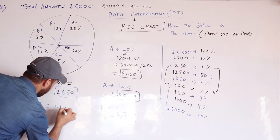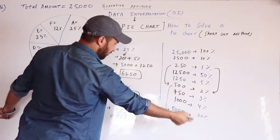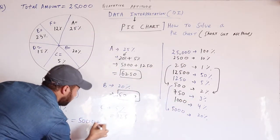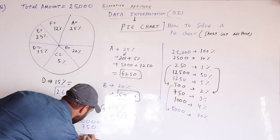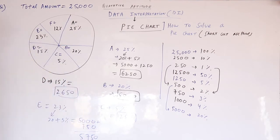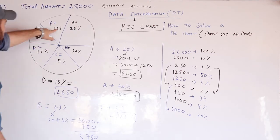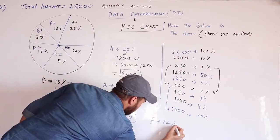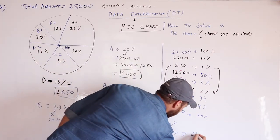Now if I take 23% of this amount: 23% means 20% plus 3%. 20% equals 5,000 and 3% equals 750, so that is 5,750. Finally, Person F spends 12% of the total amount. 12% means 10% plus 2%: 10% is 2,500 plus 2% which is 500, so Person F spends 3,000 rupees.